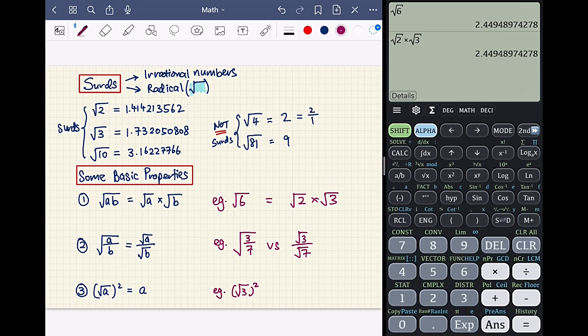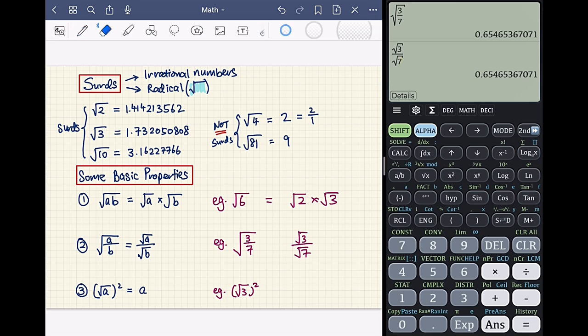I'm going to numerically verify this. Let's take square root of 3 over 7 inside the square root. We're going to get this decimal 0.65465367071. Next, let's try to break up this fraction into square root of 3 over square root of 7. And we see that numerically, it is the same thing. So square root of 3 over 7 can be written as square root of 3 over square root of 7. So second property is verified.